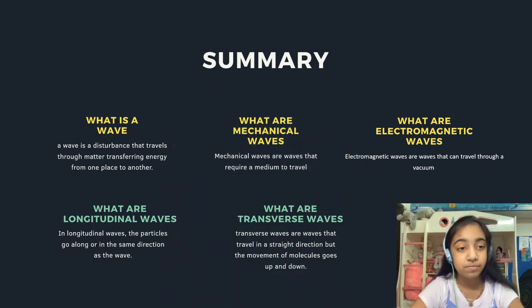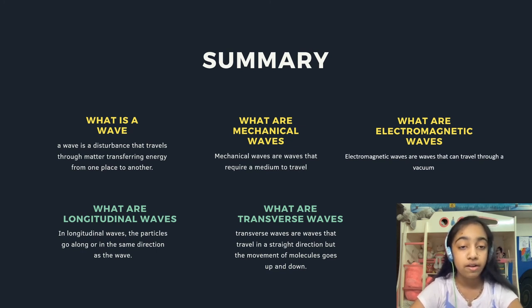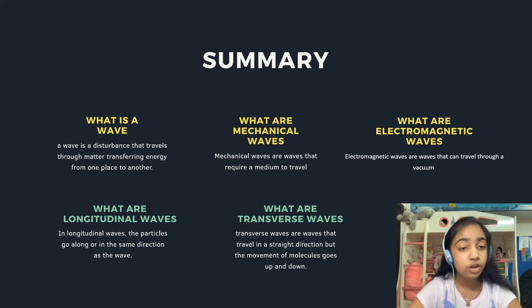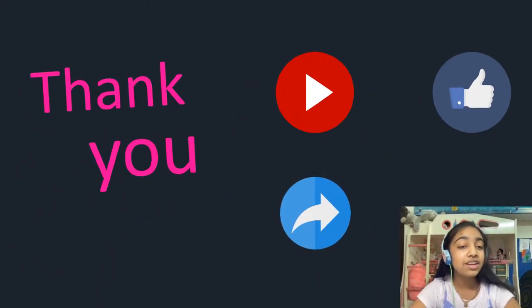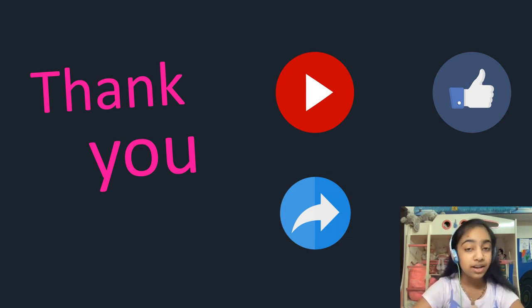So now the summary: a wave is a disturbance that travels through matter, transporting energy from one place to another. Mechanical waves are waves that require a medium to travel. Electromagnetic waves are waves that can travel through a vacuum. In longitudinal waves, the particles go in the same direction as the wave. Transverse waves travel in a straight direction but the movement of the particles goes up and down. Thank you for watching this video — I hope you learned something new. Remember to subscribe, hit the like button, and share this video. Goodbye!